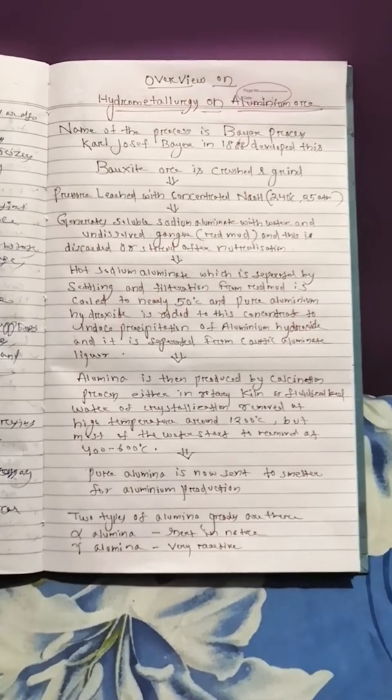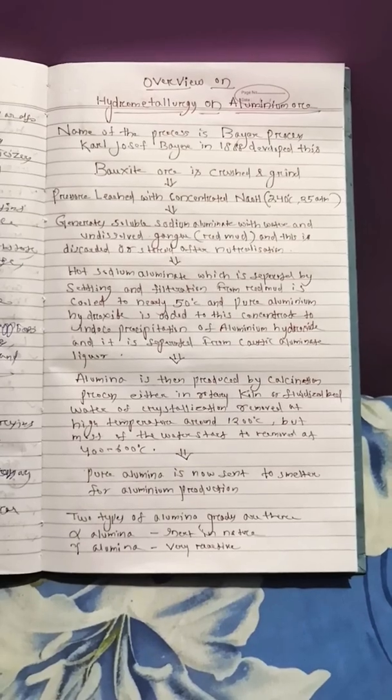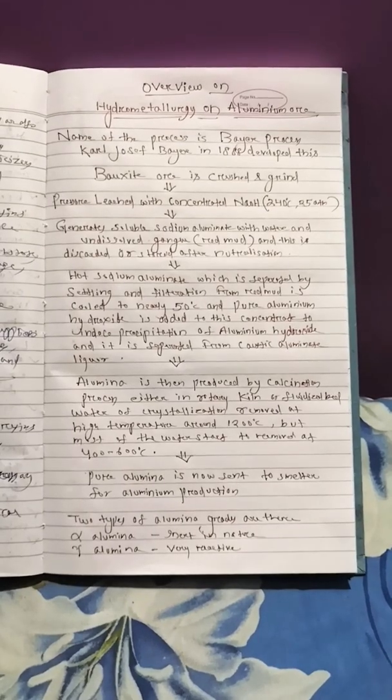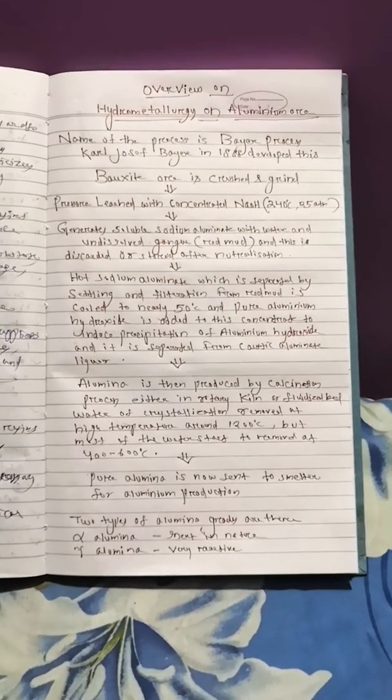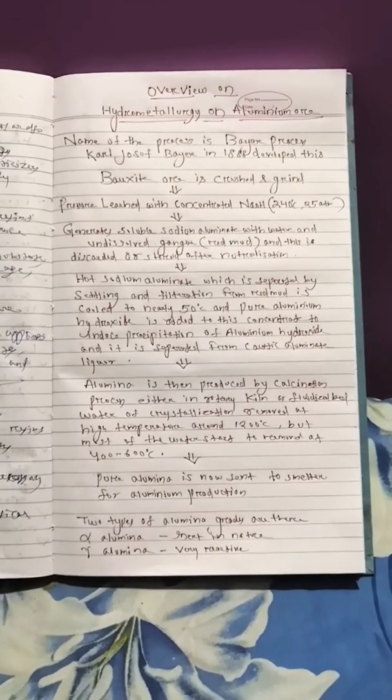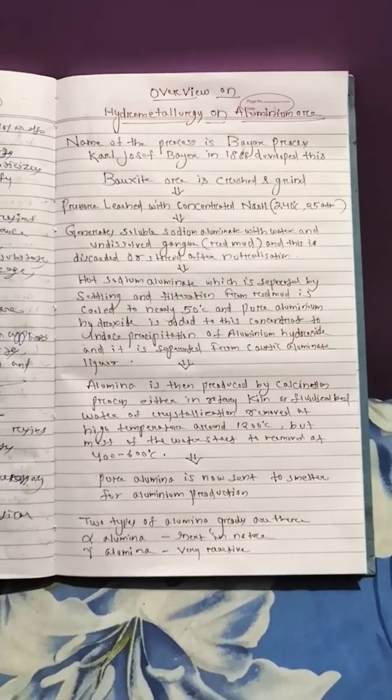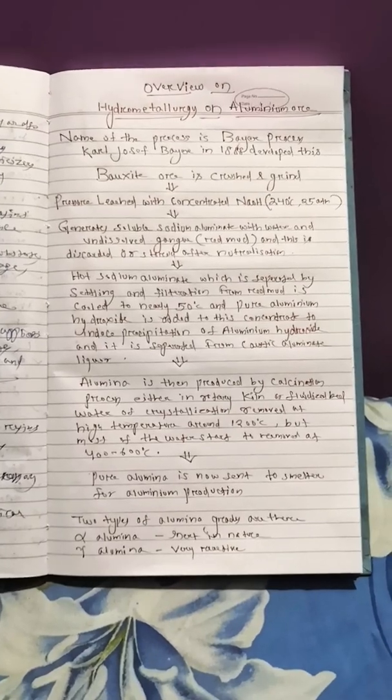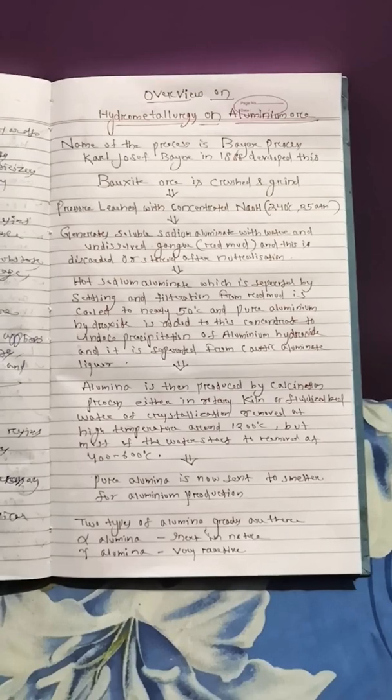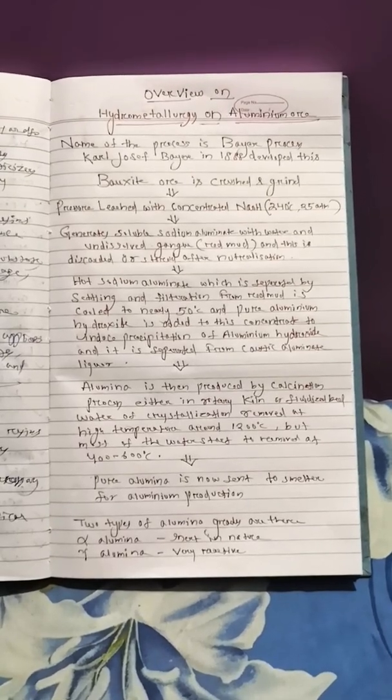Alumina is then produced by calcination, either in a rotary kiln or using a fluidized bed roaster. Water of crystallization is removed at high temperatures around 1200°C, but most of the water starts to remove at 400 to 600°C.